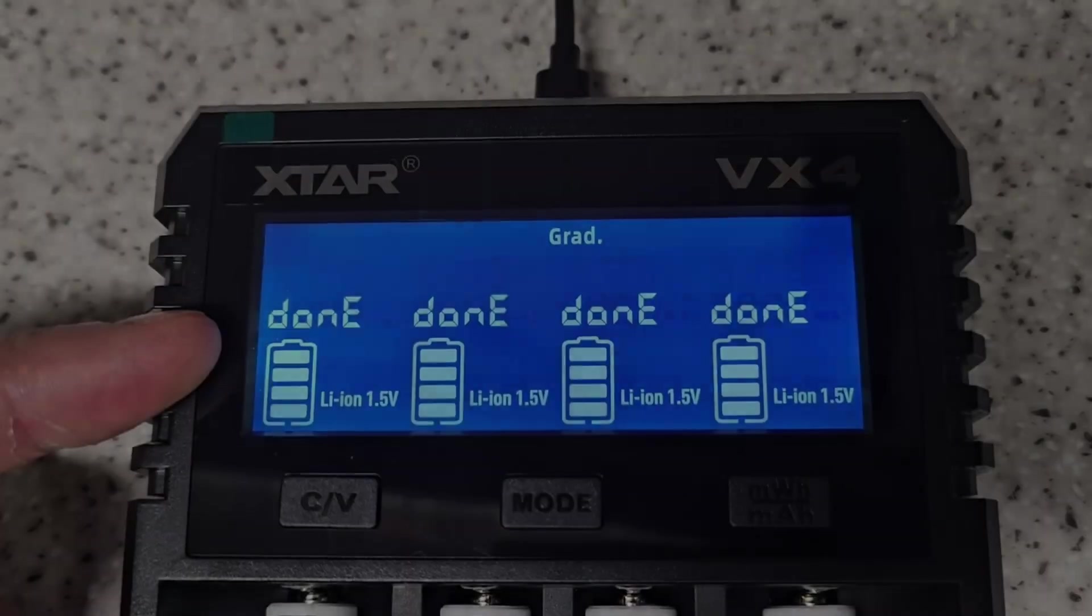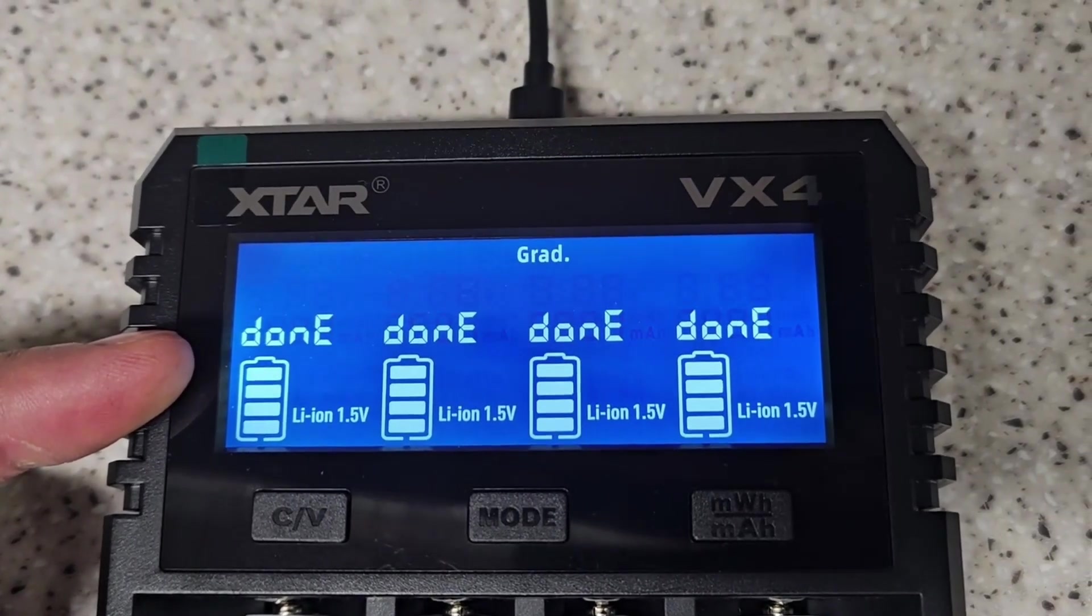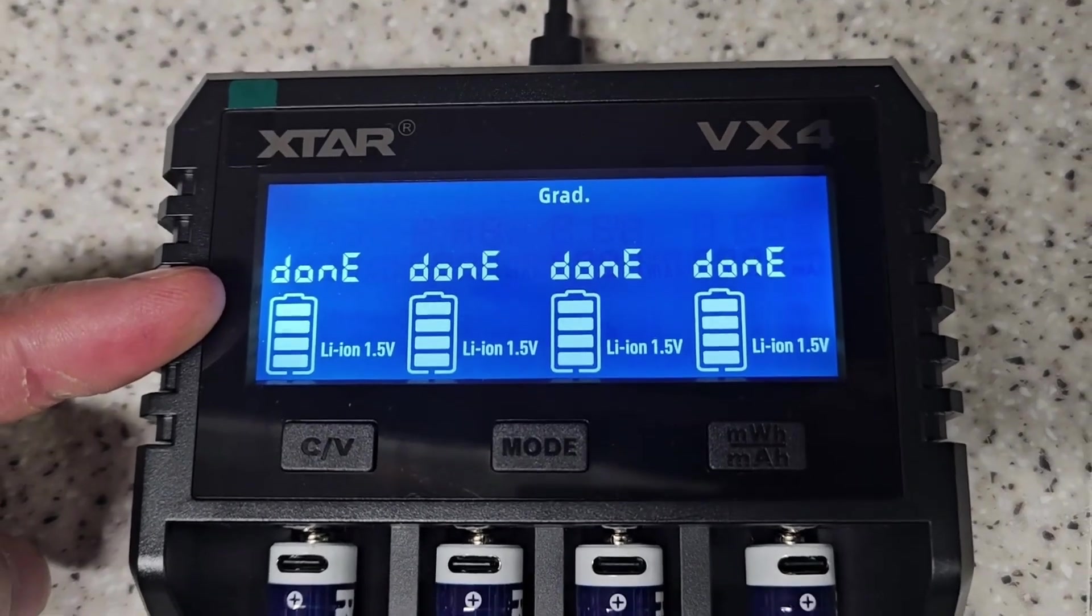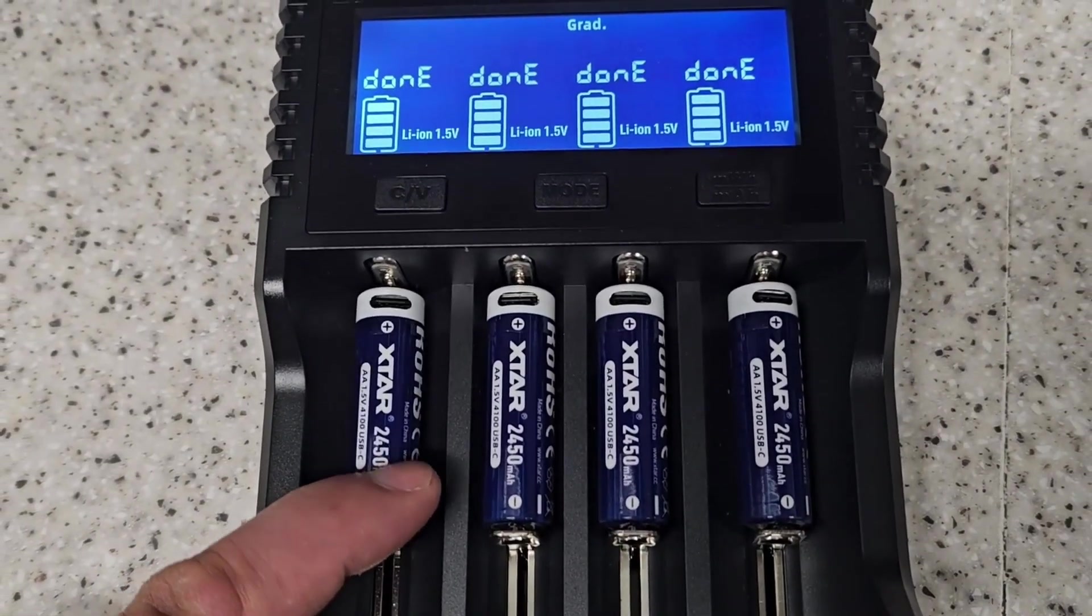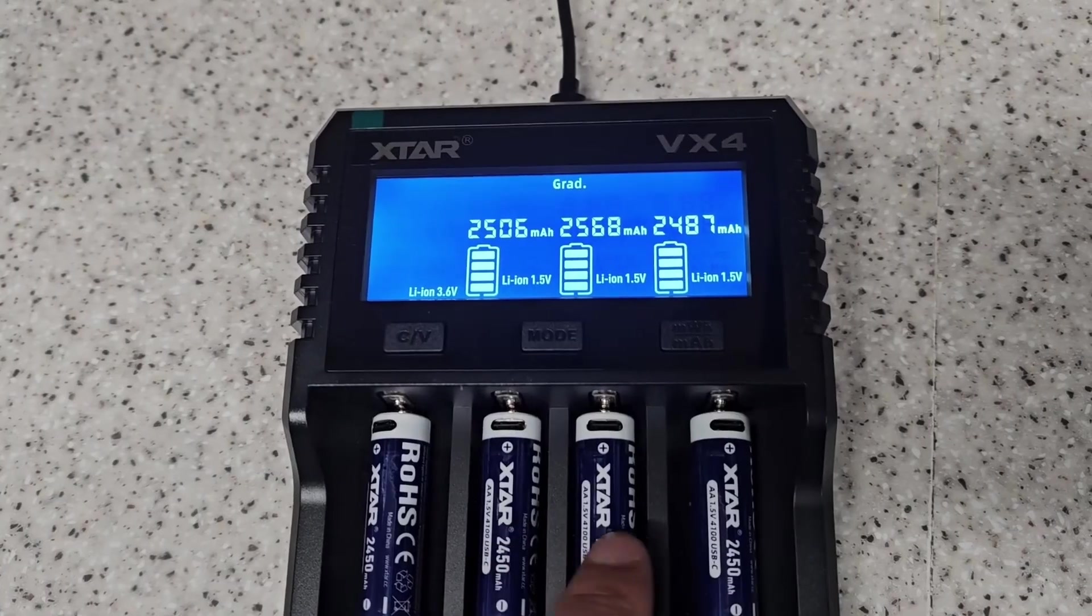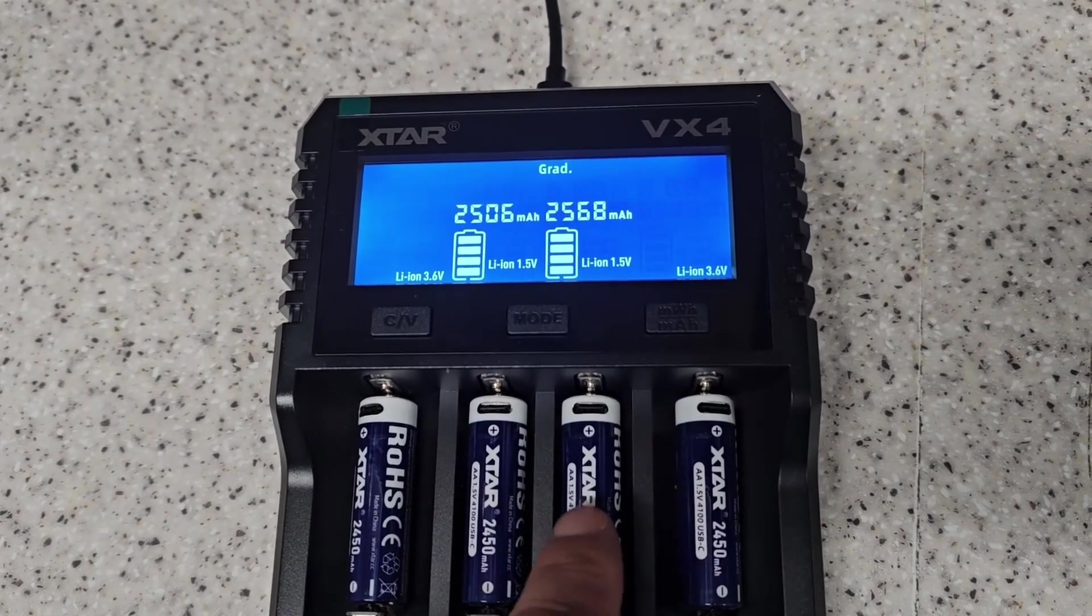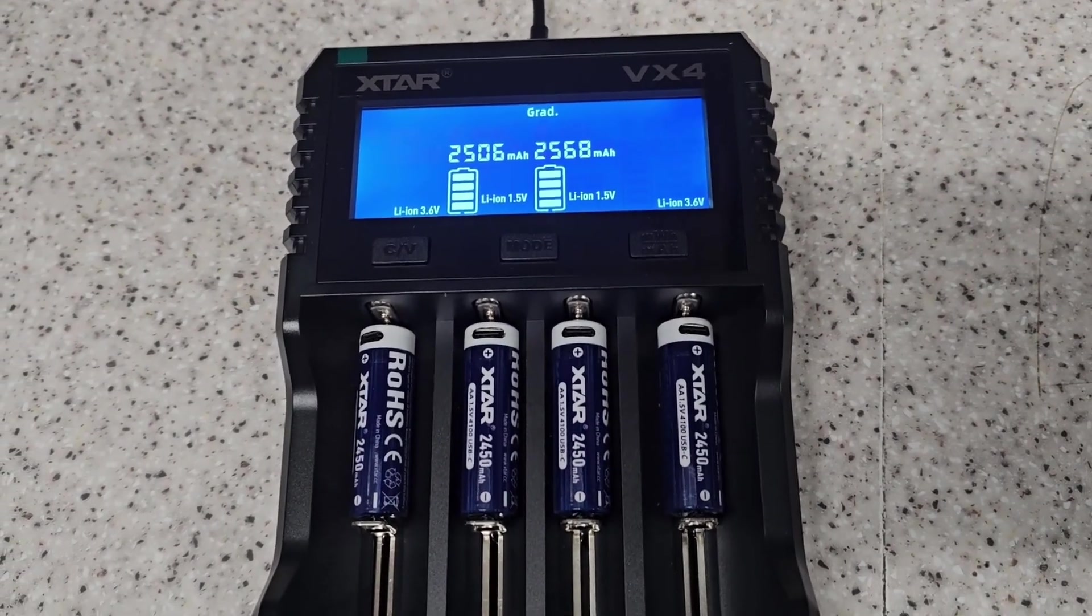Ladies and gentlemen, check it out. Look at this. 2.481 milliamp hours. Basically, 2.5 milliamp hours. These X-Star batteries do exactly what they say on the tin. Fair play for a Chinese company to actually understate their battery capacity. Thank you very much for sending these in. Well done, X-Star.